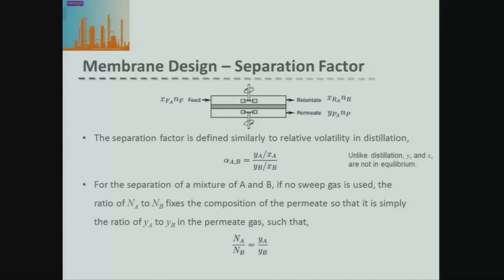The key difference from distillation is that our x and y fractions are not in equilibrium, because membranes are not an equilibrium process — they are a kinetic process. If we have no sweep gas, the ratio of our permeate concentrations must equal the ratio of the fluxes of each of those components through the membrane, because that's just the material that has passed through. This allows us to write the ratio of our permeate compositions in terms of the ratio of the fluxes.